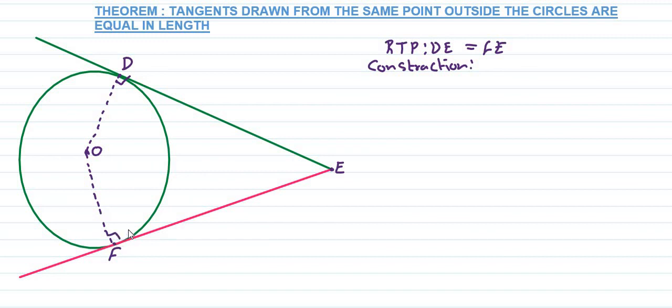The radius is perpendicular to the tangent. For our construction, we join OD and OF. O is the center, and we also join OE.